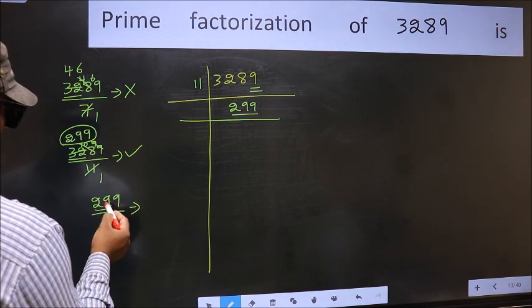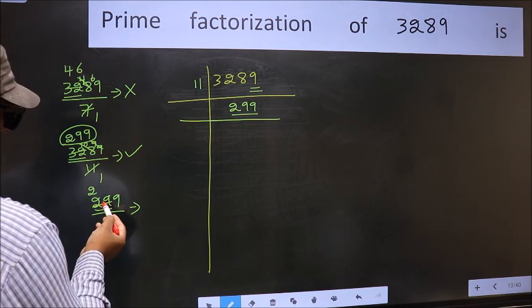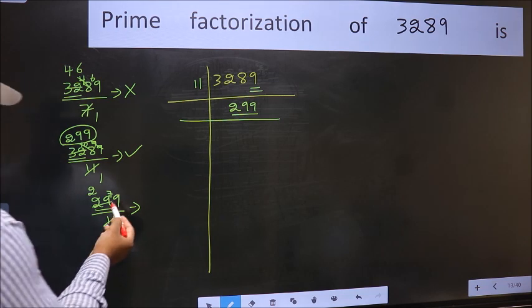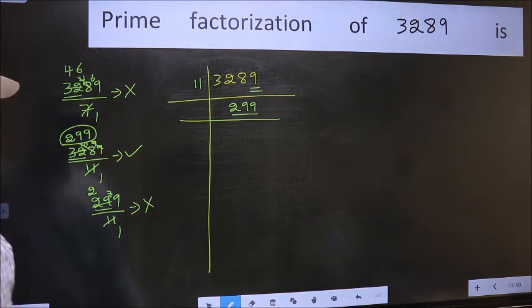A number close to 29 in the 11 table is 11 times 2, 22. 29 minus 22 is 7, carried forward 79. We don't get 79 in the 11 table. So this is not divisible by 11.